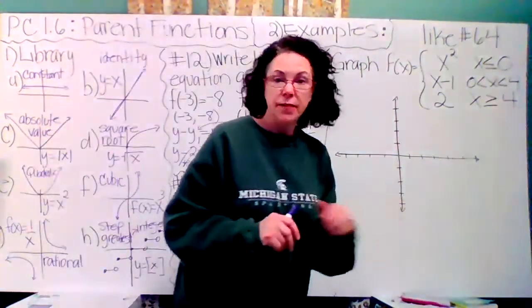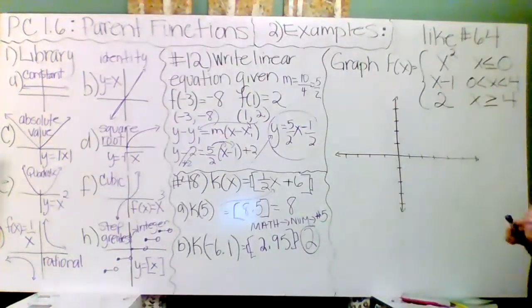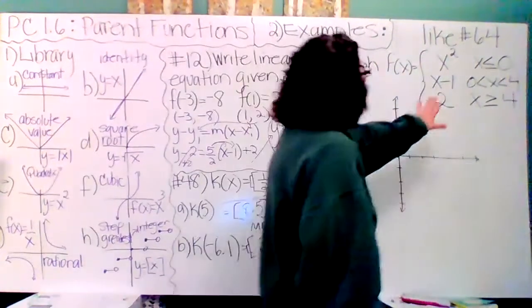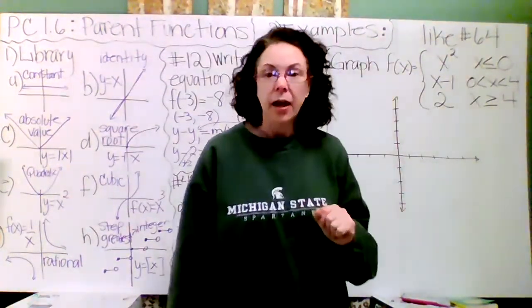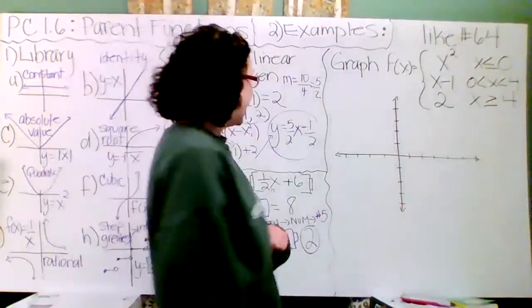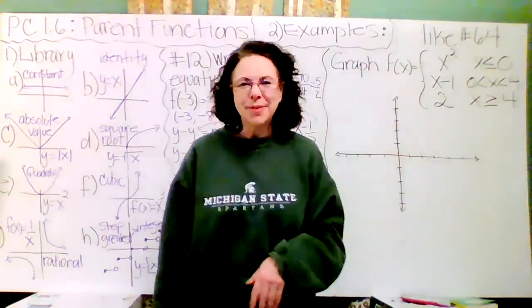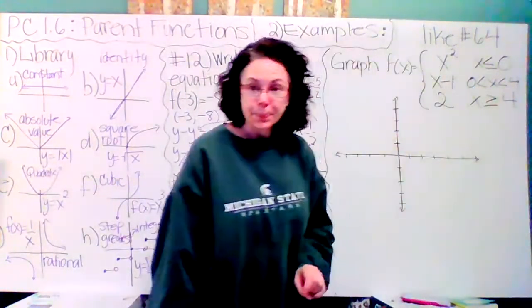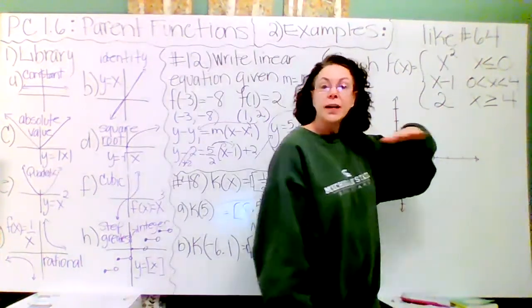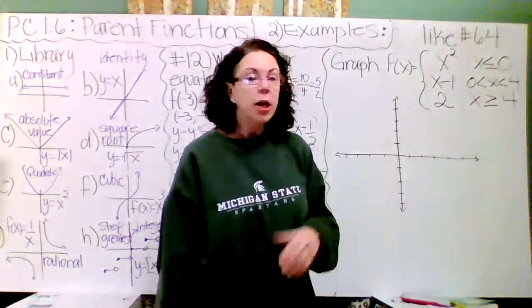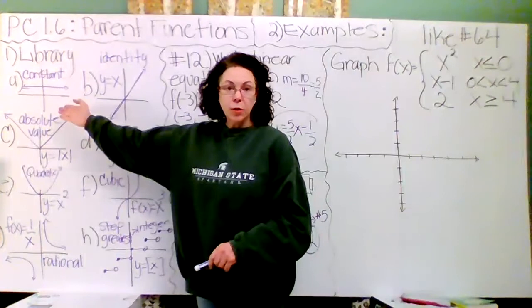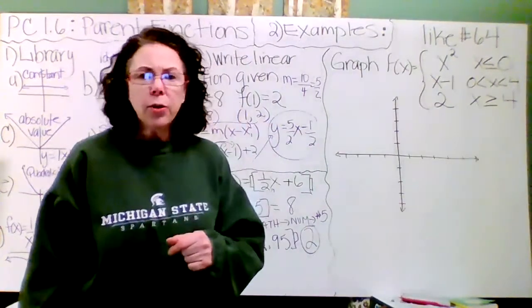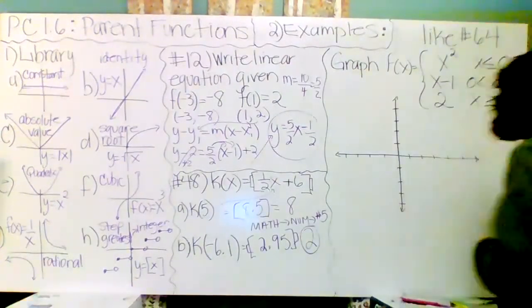What if you're asked, this is a problem like number 64, to graph x squared? You know what that looks like. But it's only going to happen where x is less than or equal to zero. What if I asked you to graph the line x minus one? Y intercept of negative one, slope of one. You would know how to put that across the graph, but we're just going to make it happen from zero to four. And then to graph the constant f of x or y equals two, that's a horizontal line where y equals two. We're just going to graph it where x is greater than or equal to four.